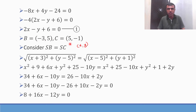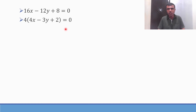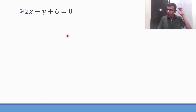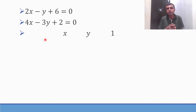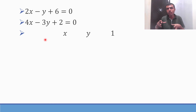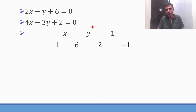Now we have two equations: Equation 1 is 2X minus Y minus 6 = 0, and Equation 2 is 4X minus 3Y plus 2 = 0. We'll solve these using the cross multiplication method. I recommend this method because in one shot you can get both X and Y.